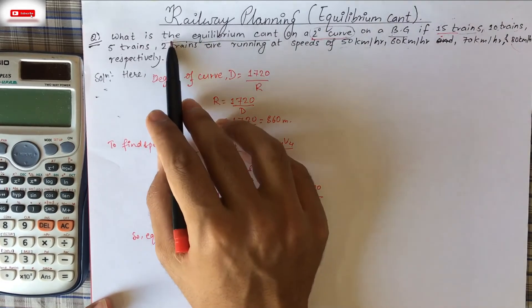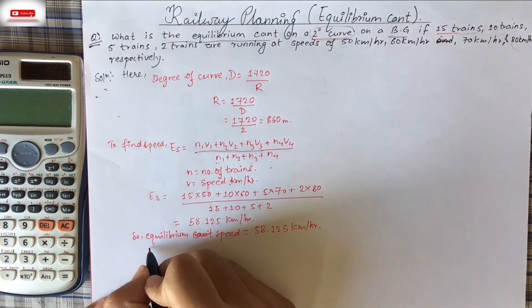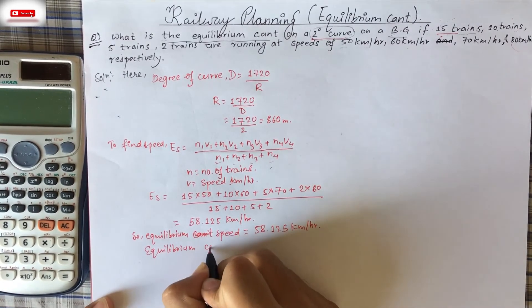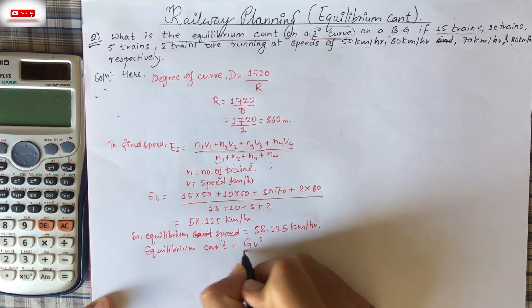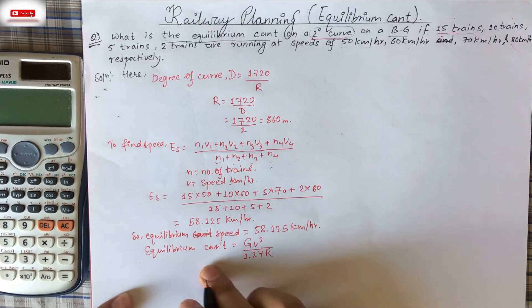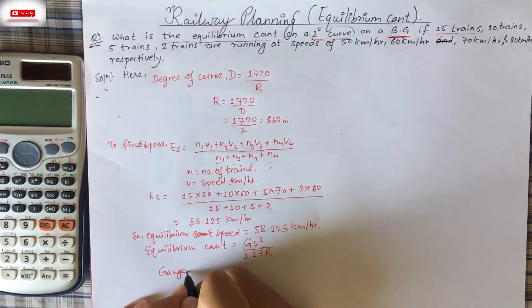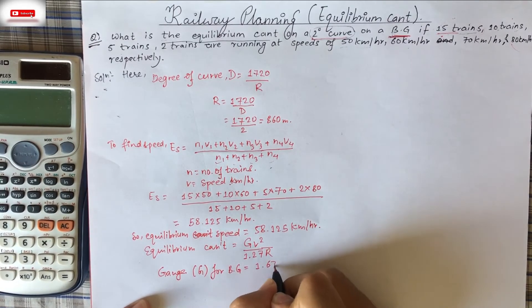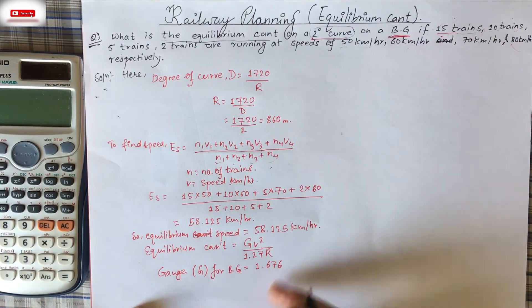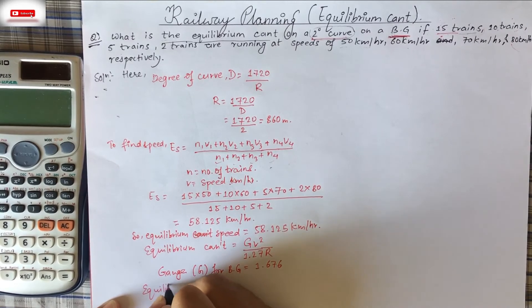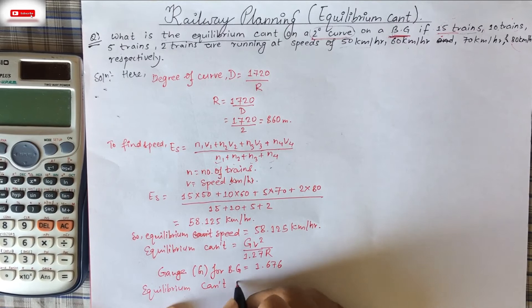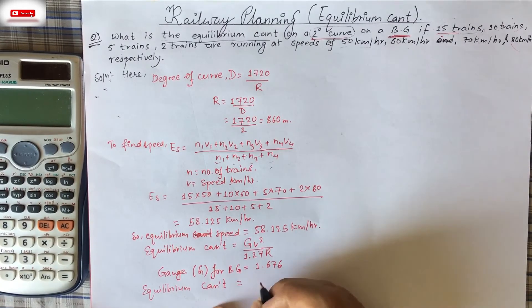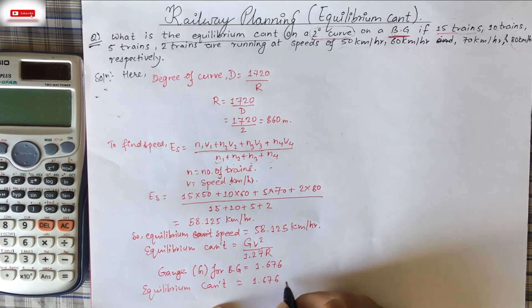Now what should we find? We have to find equilibrium cant. So equilibrium cant is equal to capital G V square upon 1.27 R. This is the formula for equilibrium cant. And it is clearly saying that it is for BG. So for BG, our gauge value will be gauge capital G. For BG, our broad gauge will be 1.676. This will be the value. For meter gauge, it will vary likewise.